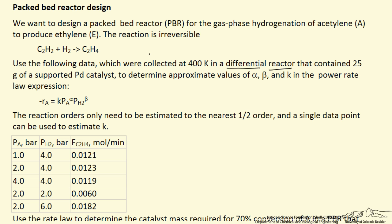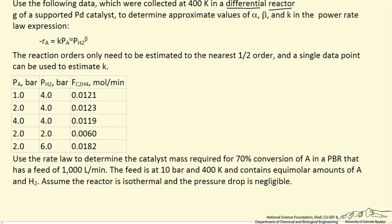The reactor has 25 grams of catalyst, and we're interested in the order of the reaction with respect to each of the reactants, and then interested in determining the rate constant. Notice that we only need to determine the orders of reaction to the nearest half order to simplify the calculations. Then we want to use that rate law to determine how much catalyst we would need for 70% conversion in a much bigger reactor processing 1,000 liters per minute at 10 bar and 400 Kelvin.